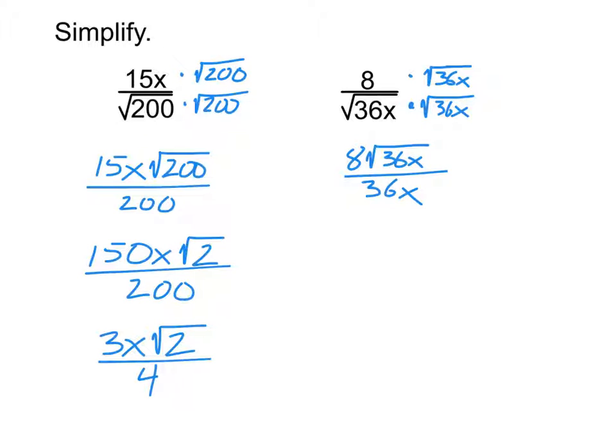Something similar happens on the second one. Now you'll notice the root 36x simplifies because the square root of 36 is 6. 8 times 6 is 48. So it becomes 48 root x over 36x. And then I'm going to reduce that. You notice top and bottom in this case can divide by 12. And so if I do that, it gives me 4 root x over 3x. And then that is done.